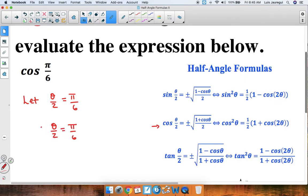To solve for theta, let's multiply by 2 on both sides of the equation and we get that the 2's cancel over here. So theta becomes 2 times pi divided by 6.